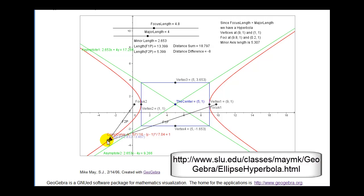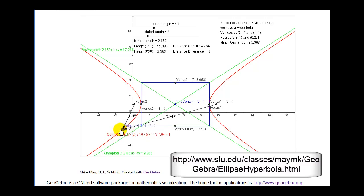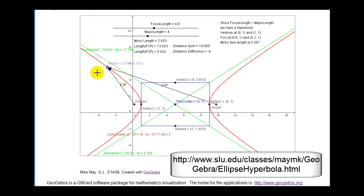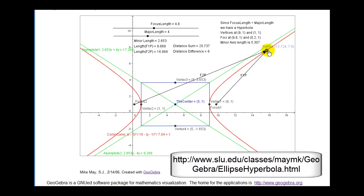For example right now, they're taking this short distance and subtracting this longer distance and that difference is negative eight. If we take the absolute value of that, it would be positive eight, and that'll be true for any point on the hyperbola. As I animate this point, the common difference remains negative eight. If I move this point to the other piece of the hyperbola, the common difference is now positive eight, and the absolute value of positive eight is still eight.